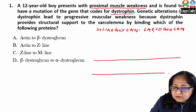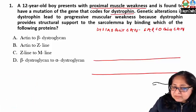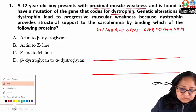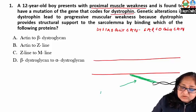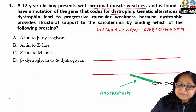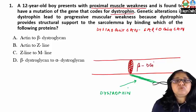If this is the sarcolemma, here is actin which is present — the double-stranded actin. Attaching the actin to the sarcolemma is a rod-like protein known as dystrophin. Dystrophin attaches the actin to another sarcolemma protein known as beta-dystroglycan.